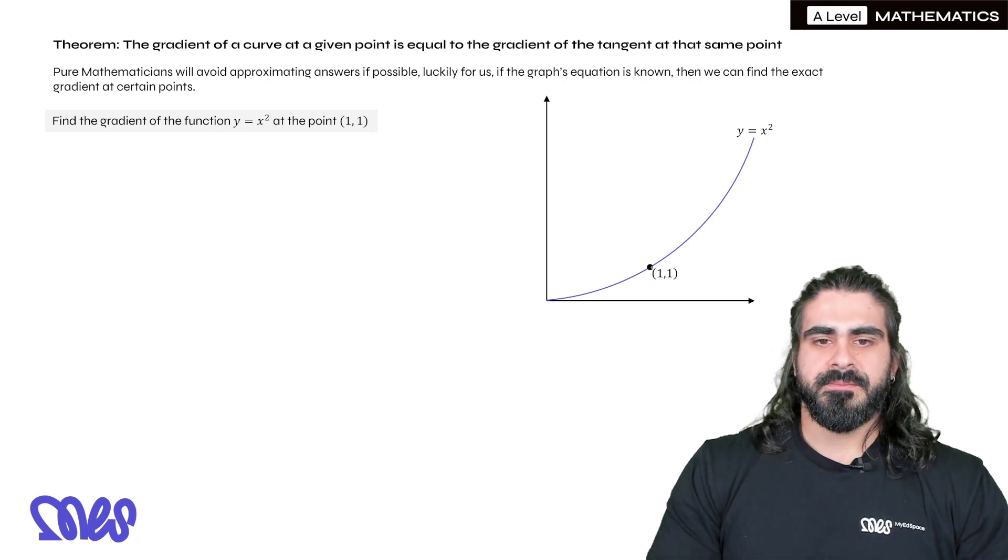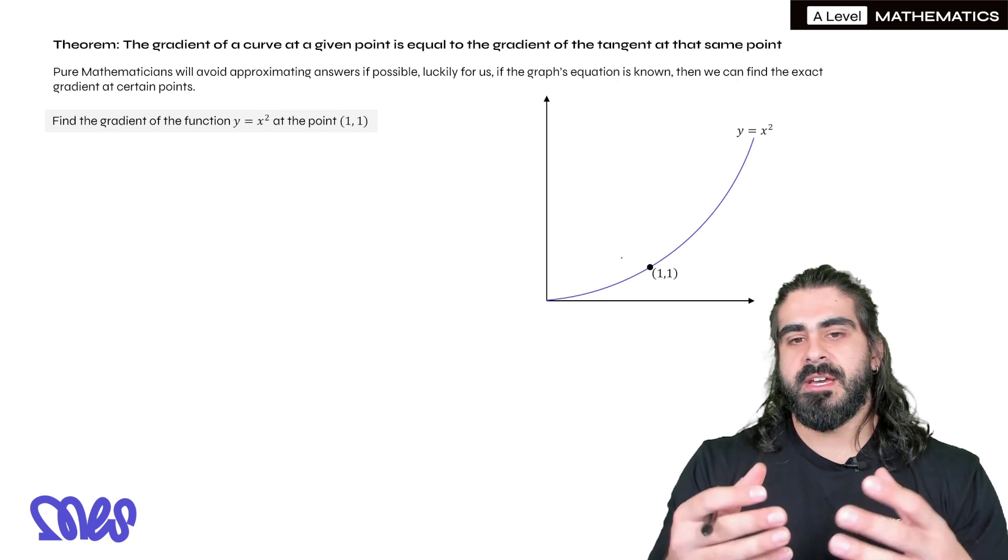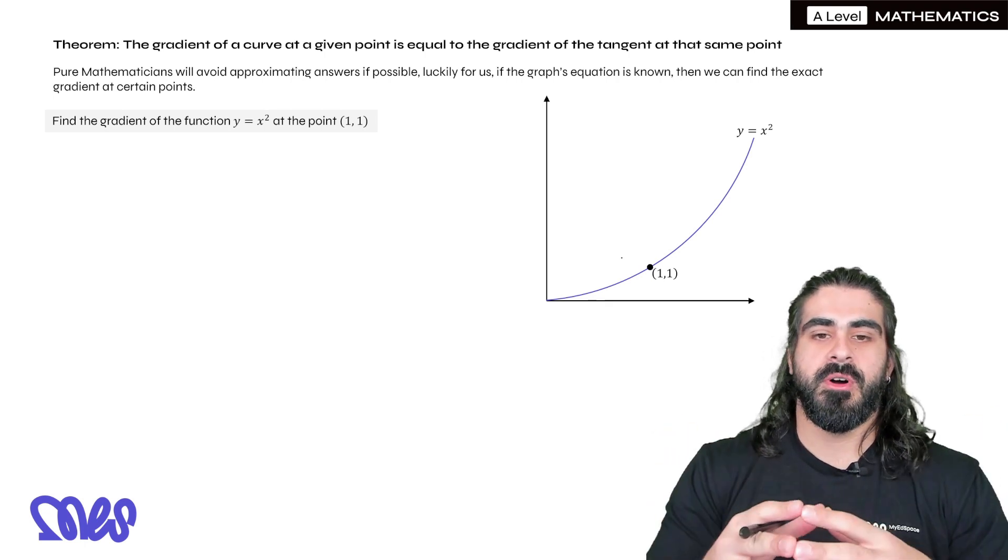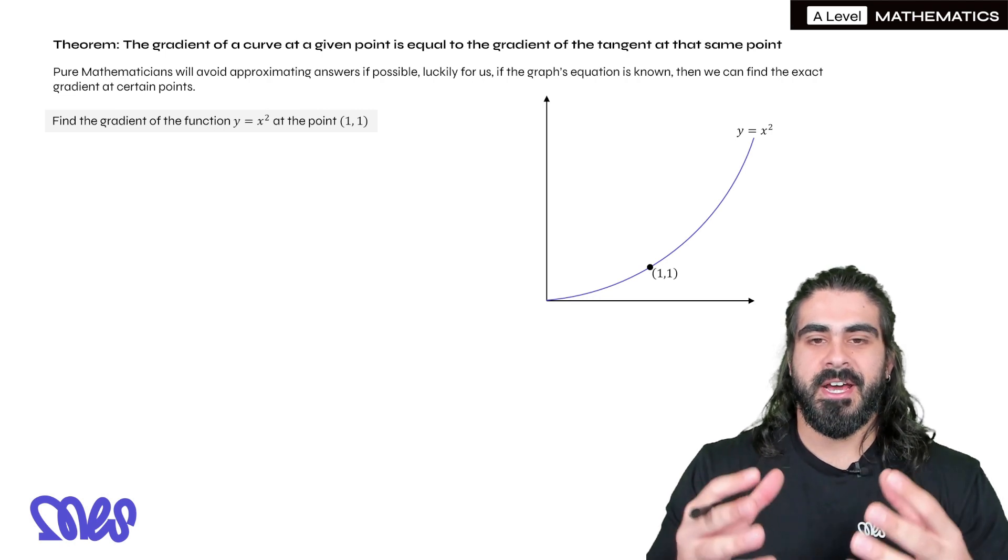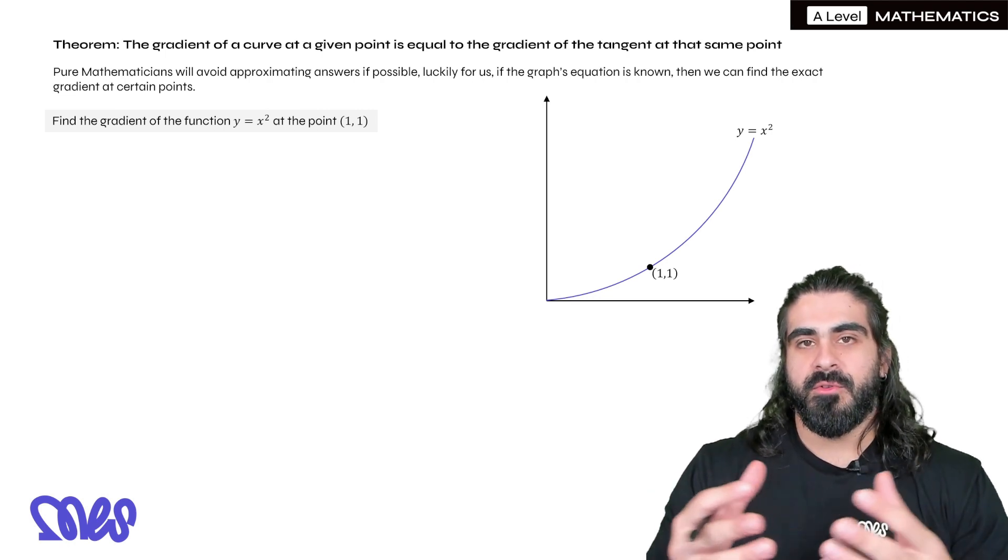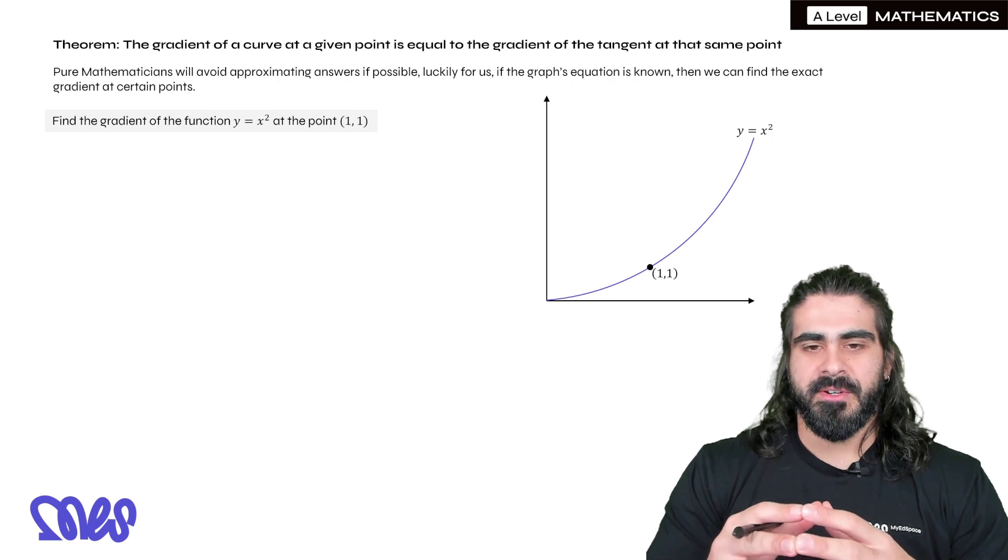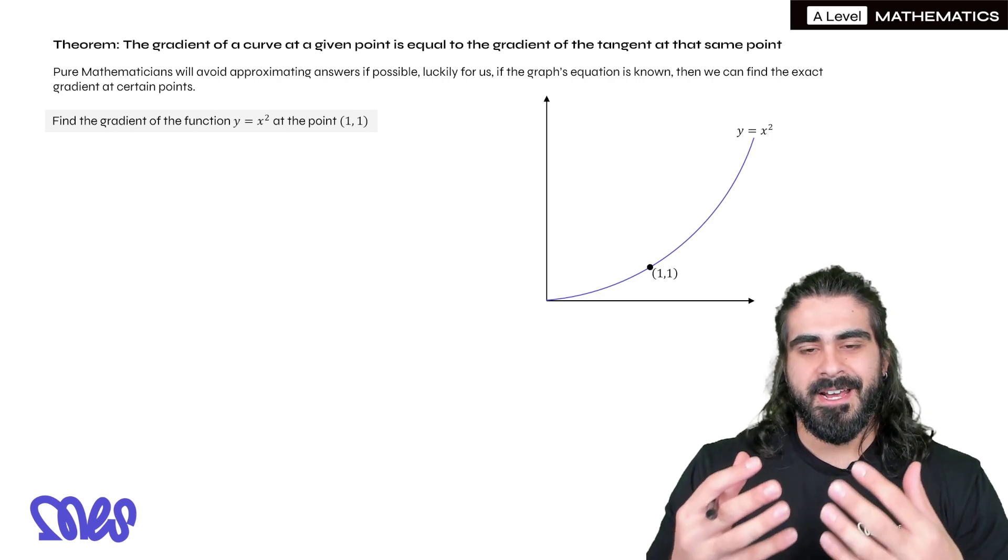So find the gradient of the function y equals x squared at the point (1, 1). Now the problem here, just like at GCSE, is we don't want to draw a line, because if you line up 20 people and ask them to draw a tangent at that point (1, 1), most of them are going to draw the tangent differently. So it's not an accurate answer.